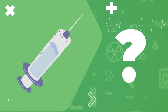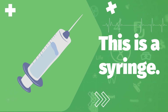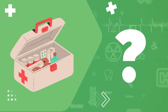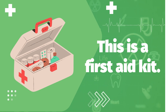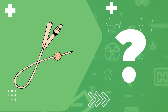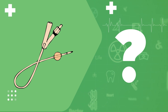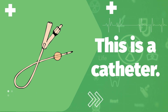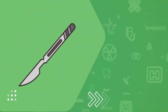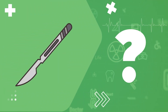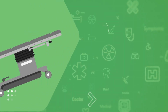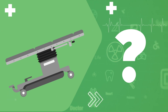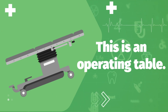What is this? This is a syringe. What is this? This is a first-aid kit. What is this? This is a catheter. What is this? This is a scalpel. What is this? This is an operating table.